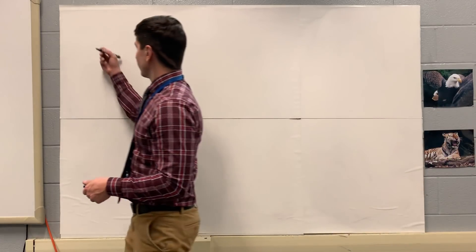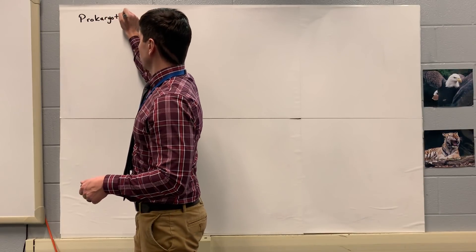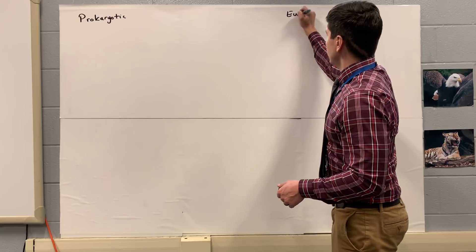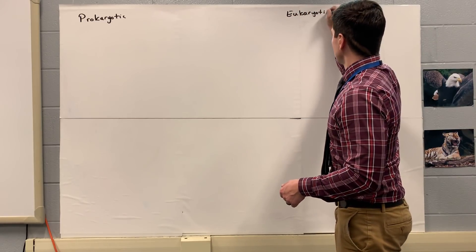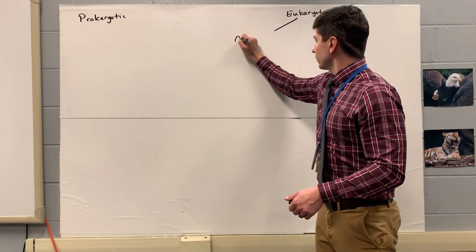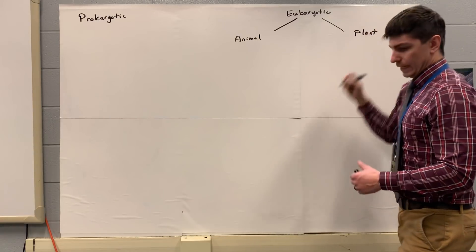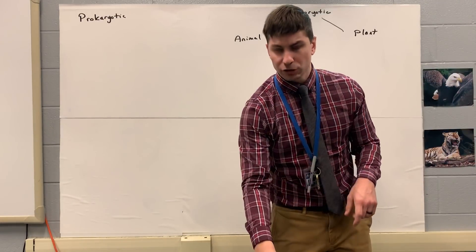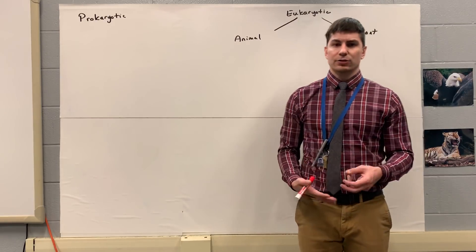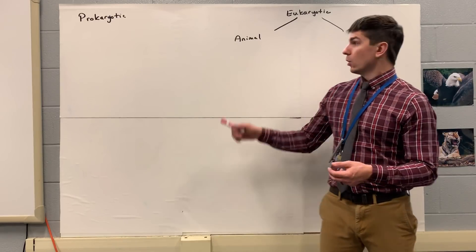To start off, I'm going to draw our prokaryotic cell and I'm also going to start to draw our eukaryotic cell — animal here, plant over here. What I'm going to do is make them into empty containers right now and only worry about things that are similar in all three of our cells.